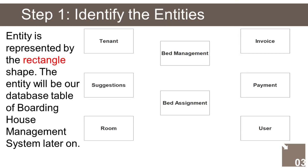Step 1: We will identify all the entities. In the Boarding House Management System we have the following entities: 1. Tenant, 2. Suggestions, 3. Room, 4. Bed Management, 5. Bed Assignment, 6. Invoice, 7. Payment, 8. User.